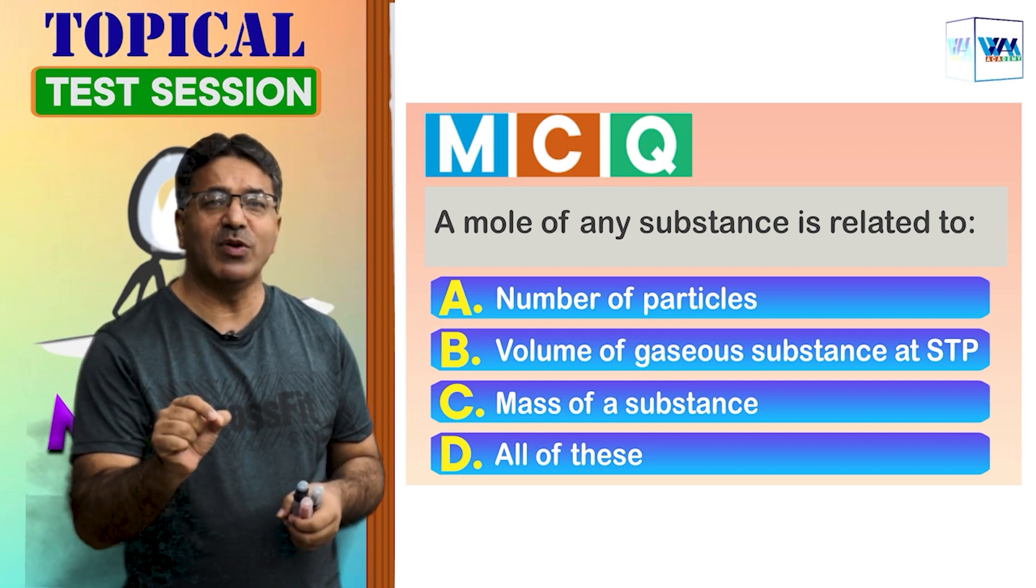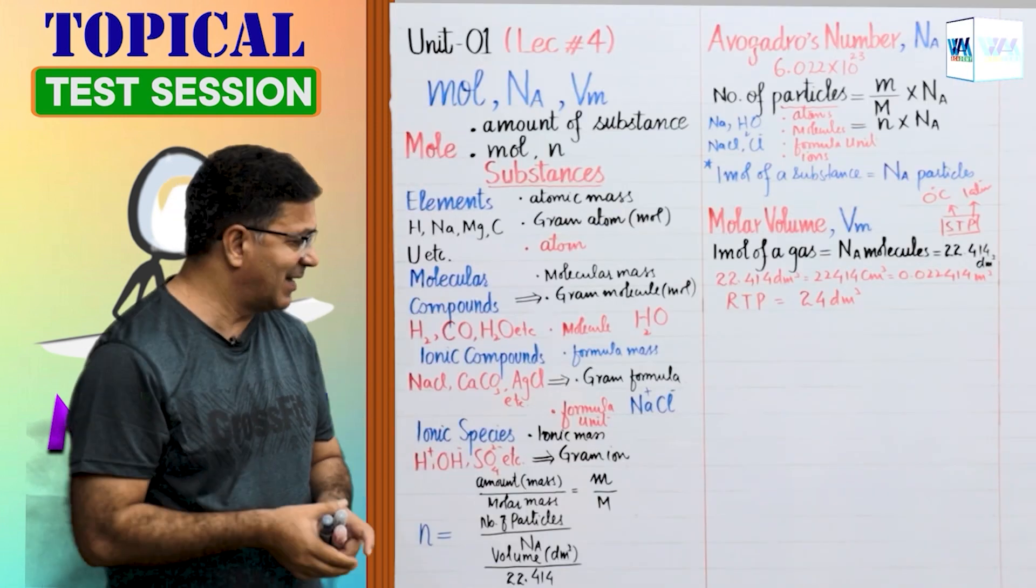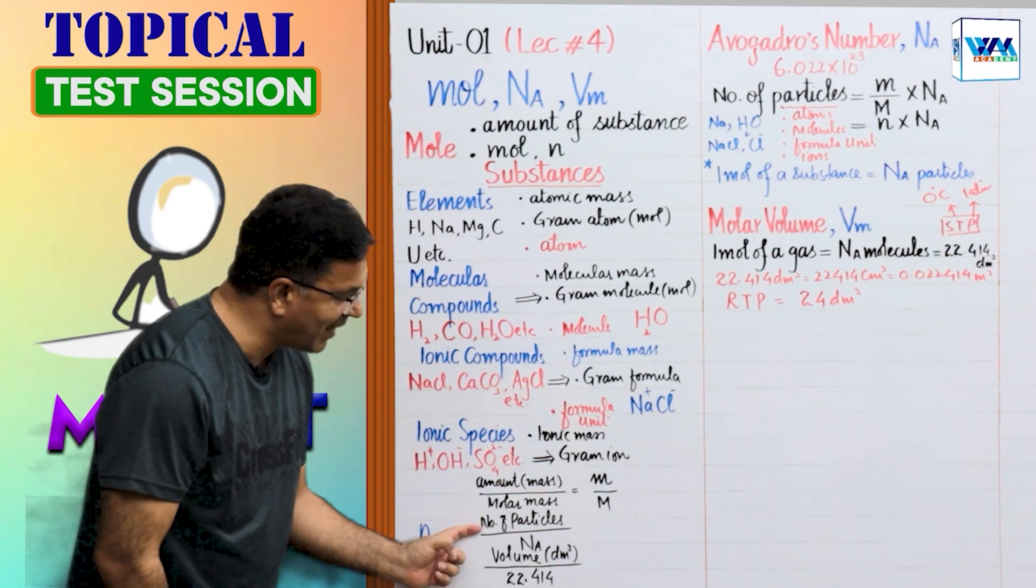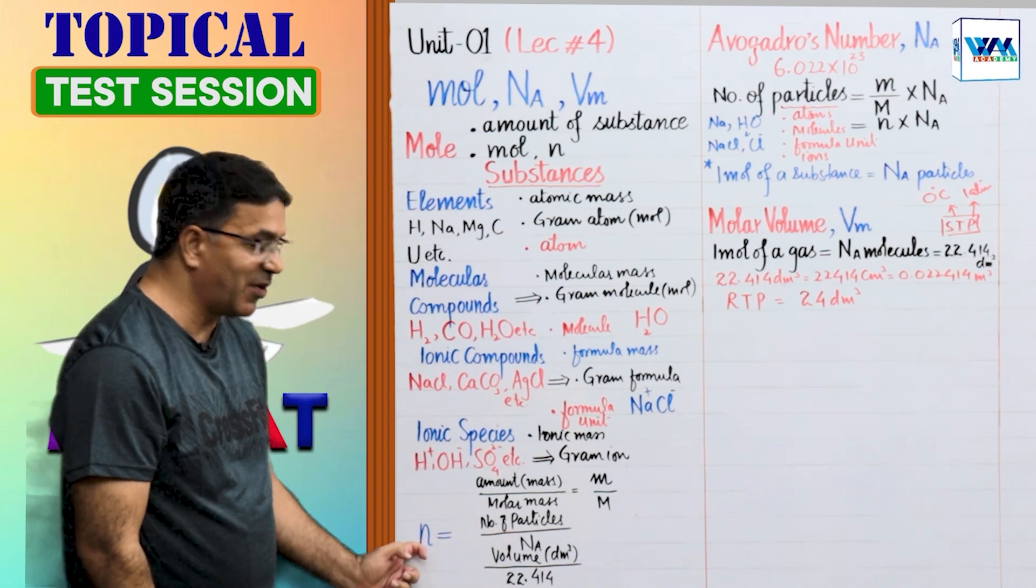How can you calculate the number of moles from the number of particles? Look at this - you can calculate moles from the number of particles by dividing by Avogadro's number. You can find the number of moles this way.